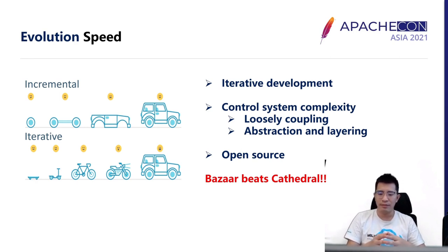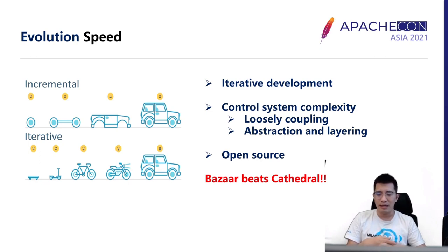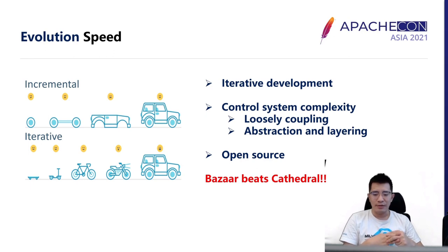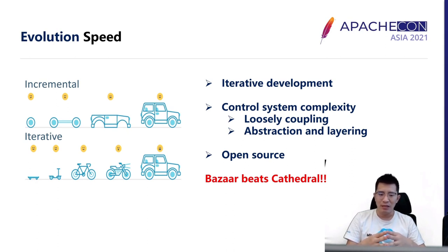Another key strategy is how we handle system complexity. We loosely decouple everything through a log pub-sub system, so each developer can focus on a smaller part of the system. We also did great work on abstraction and layering, relying on systems like Kubernetes and etcd to solve problems that are not core contributions of Milvus. Open source is another strategy to accelerate evolution, bringing great scenarios and programmers willing to contribute. We believe the bazaar will finally beat the cathedral because we have more evolution speed.